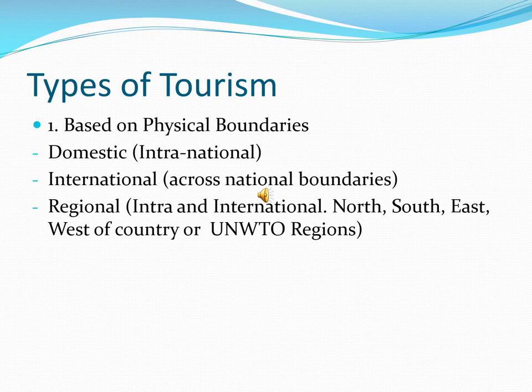Let's begin with the typology of tourism, or the types of tourism. We have identified various broader parameters. The first parameter is based upon physical boundaries — what physical boundaries are tourists crossing. If tourists are remaining within their country or region, we call it domestic tourism, also known as intranational tourism because it remains within the country.